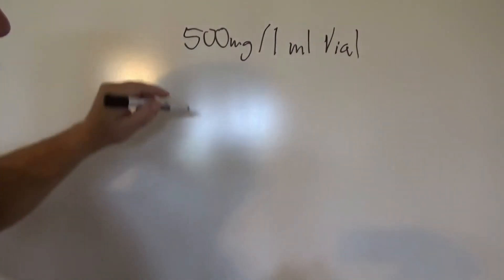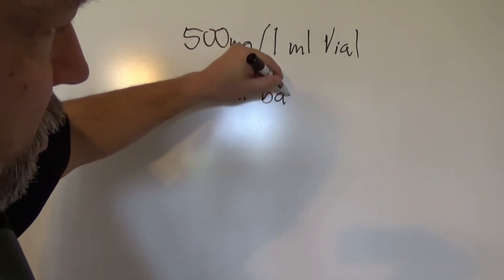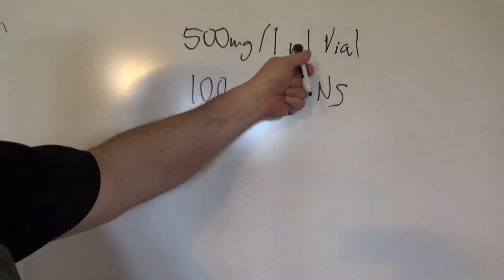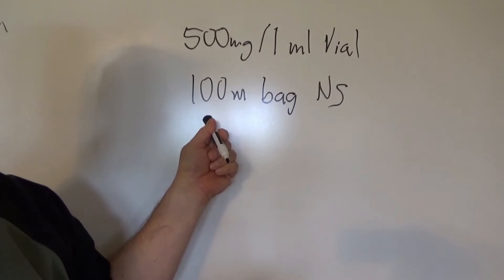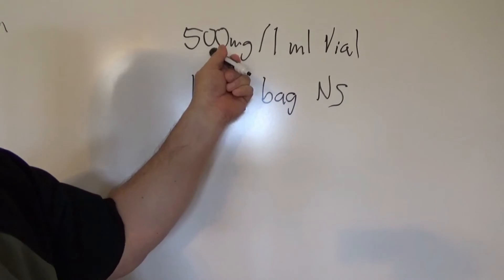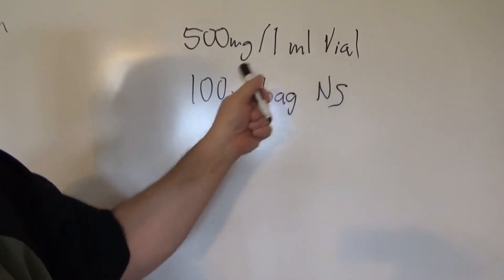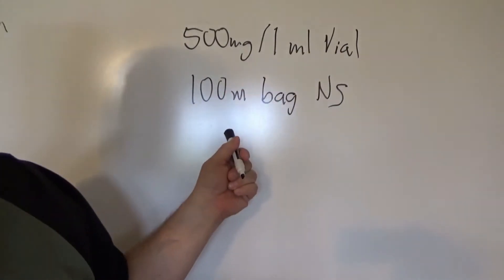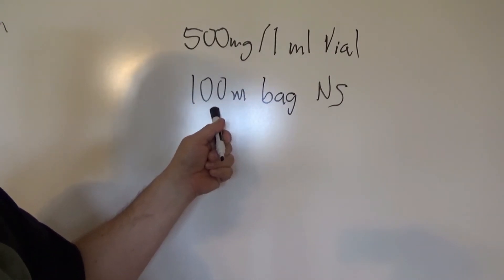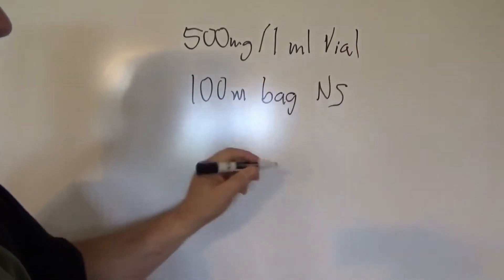We have a 100 ml bag of normal saline on hand. We're going to have to put two of these vials into the 100 ml bag in order to have 1000 milligrams — we need 1000 milligrams and we have 500 milligrams in each vial. So we need two vials, meaning we're putting two milliliters into the bag. The first thing you do is take two milliliters out of the bag.